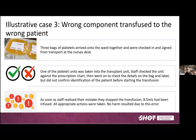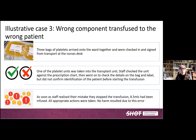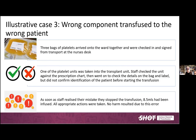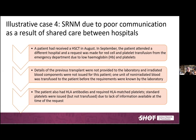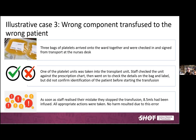Here is an example where the wrong component was transfused to the wrong patient. Three bags of platelets arrived on the ward together — always a risk when several components arrive simultaneously — and were signed in from transport at the nurse's desk. One platelet unit was taken into the transplant unit. Staff did all the checks against the unit, prescription chart, and bag and label, but critically did not confirm the identification of the patient before connecting up the transfusion. This was an inappropriate platelet transfusion given to the wrong patient. As soon as staff realised their mistake they stopped the transfusion; no harm resulted.